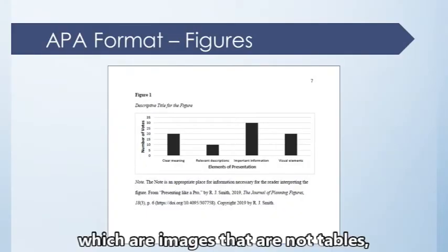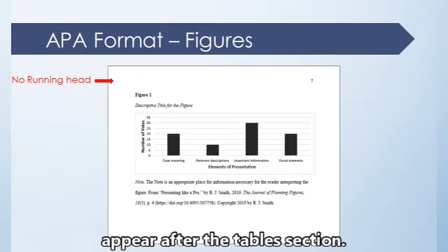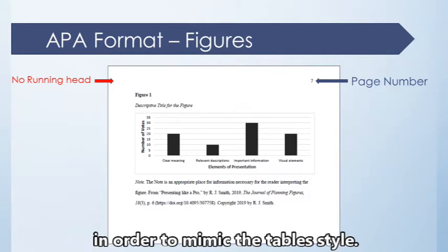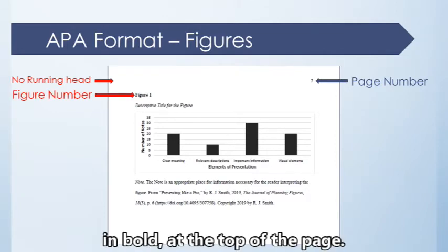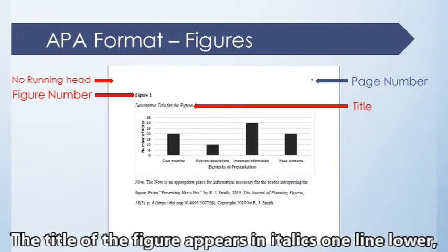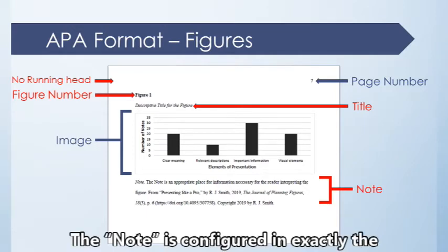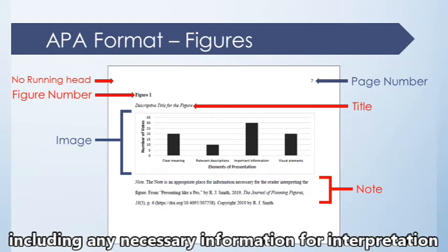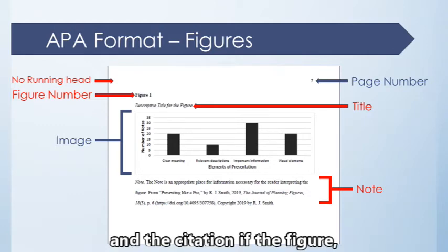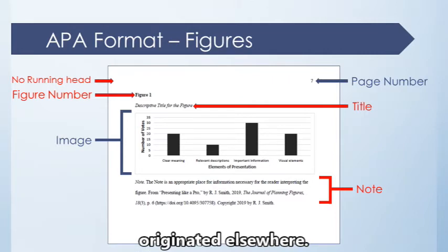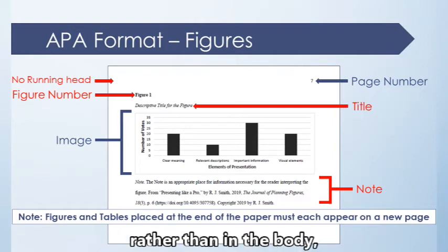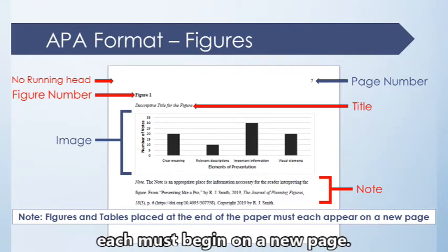Figures, which are images that are not tables, appear after the tables section. The format for figures has changed to mimic the tables' style. The figure number now appears in bold at the top of the page, the title of the figure appears in italics one line lower, followed by the image. The note is configured in exactly the same manner as the table note, including any necessary information for interpretation and the citation if the figure originated elsewhere. Remember, when tables and figures are placed at the end of the paper, each must begin on a new page.